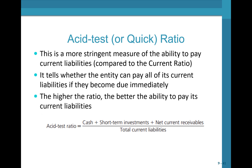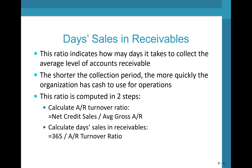Just like the current ratio, the higher the acid test ratio, the better the ability to pay current liabilities. To calculate it, we only look at highly liquid accounts — cash, short-term investments, and net current receivables — divided by total current liabilities. Finally, days sales in receivables measures how many days it takes to collect the average level of AR. First calculate the AR turnover ratio: net credit sales divided by average gross AR (beginning AR plus ending AR, divided by 2). Then divide 365 by the turnover ratio to get average collection days.